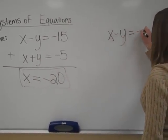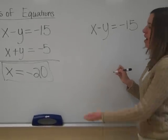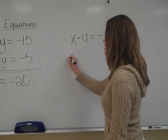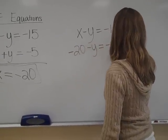x minus y is equal to negative 15. I'm going to use that first equation. I now have that x is equal to negative 20. So, negative 20 minus y is equal to negative 15.